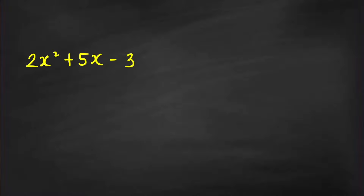In class, you're probably taught to factor this by the trial and error method, or the guess and check method, or by factoring by grouping. If you have this kind of trinomial where a and c are prime numbers or negatives — because 2 and 3 here are prime numbers — then you can easily factor it by trial and error.